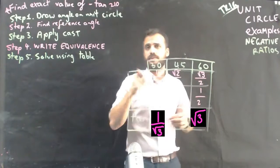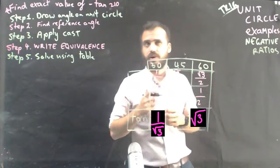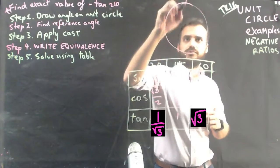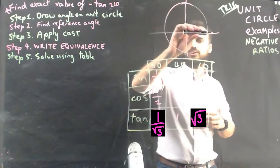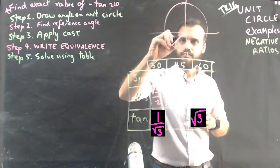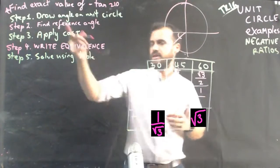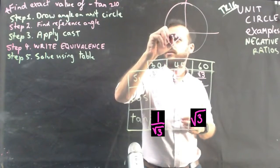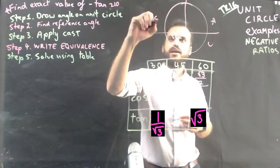Do everything you've always done, but then at the end, everything's got to flip around. So, circle, angle, 210, 90, 180, 210. Reference angle, 30 degrees. Apply CAST, C-A-S-T.